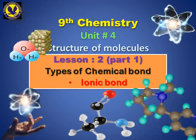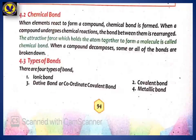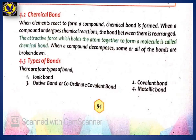On your book page number 94, this topic starts here: The Chemical Bond. When elements react to form a compound, a chemical bond is formed. When a compound undergoes a chemical reaction, the bonds between atoms rearrange.